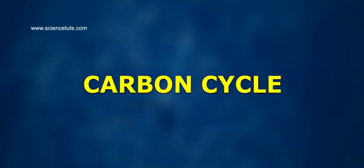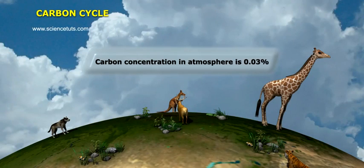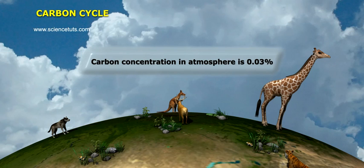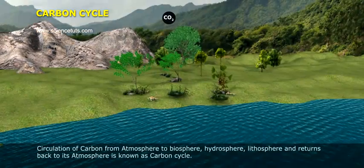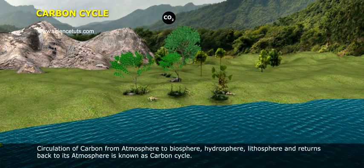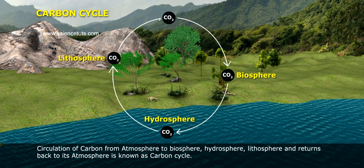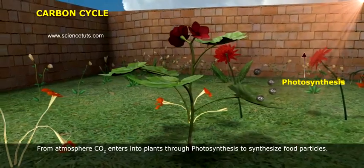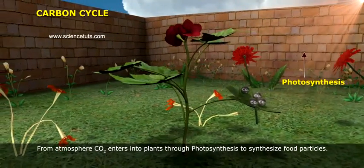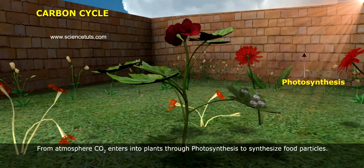Carbon cycle: the carbon concentration in the atmosphere is 0.03 percent. The circulation of carbon from the atmosphere to the biosphere, hydrosphere, lithosphere, and back to the atmosphere is known as the carbon cycle. From the atmosphere, CO₂ enters into plants through photosynthesis to synthesize food particles.